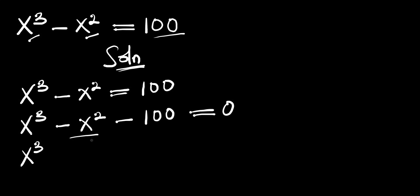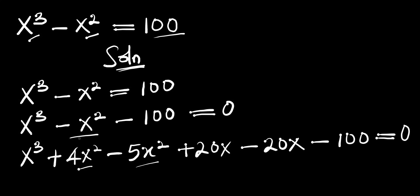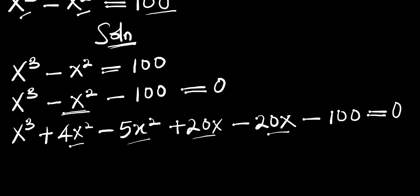Instead of negative x², we can write plus 4x² minus 5x², and we can also add plus 20x minus 20x, and we have minus 100, this equals 0. Note that 4x² minus 5x² gives you negative x², and 20x minus 20x gives you 0, so we have the original problem back.